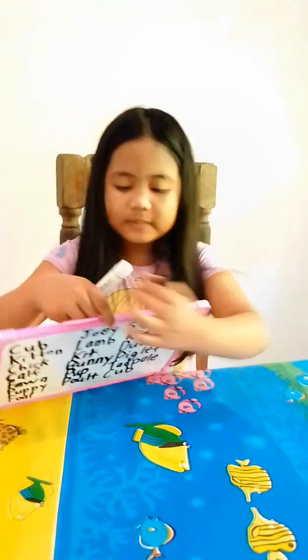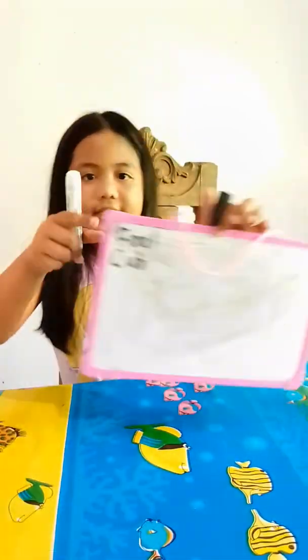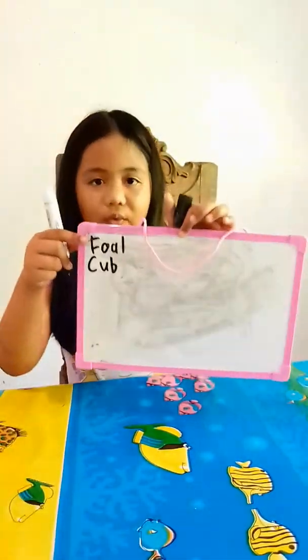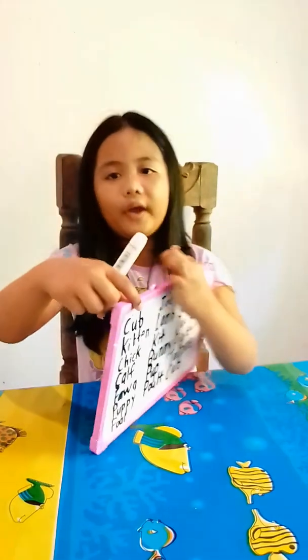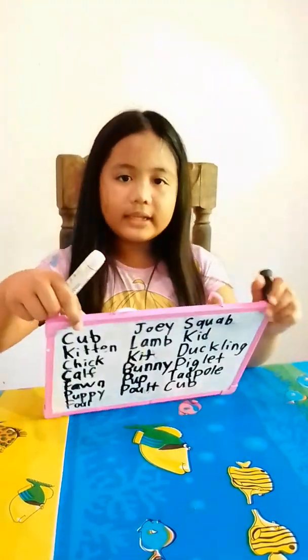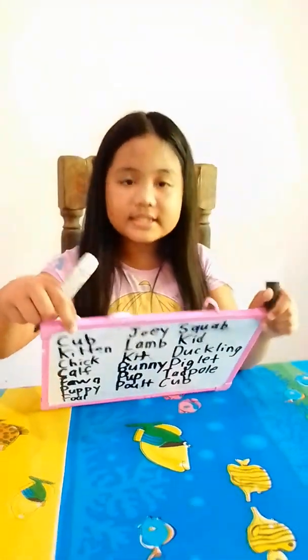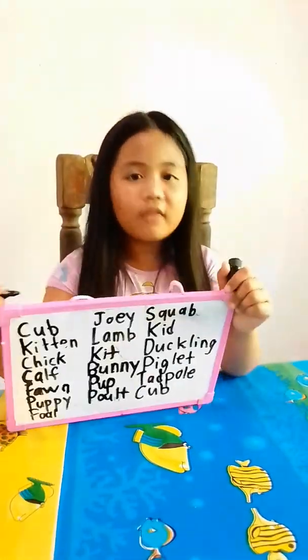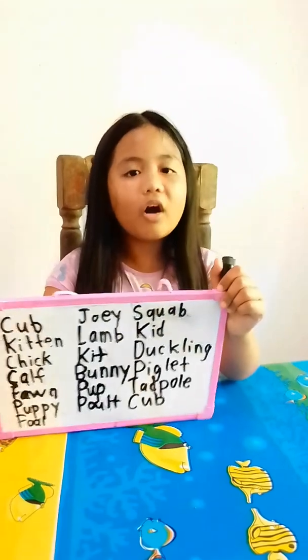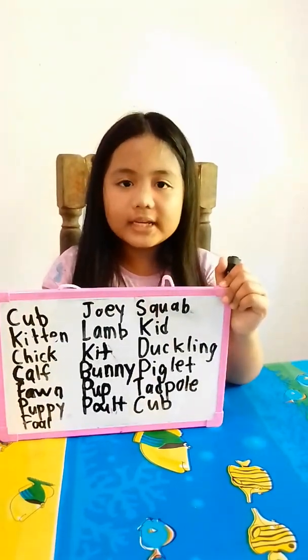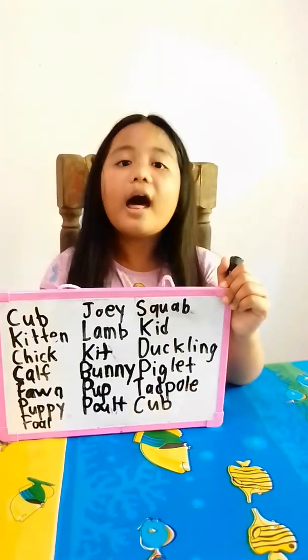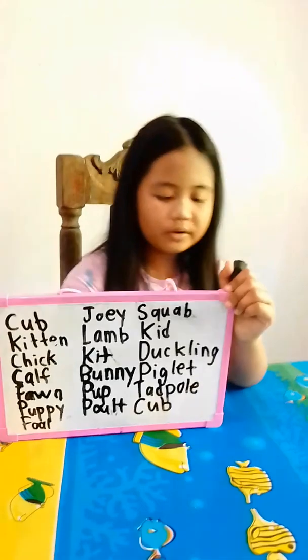The spelling is C-U-B. What is the baby of a rhino? The baby of a rhino is a cub.